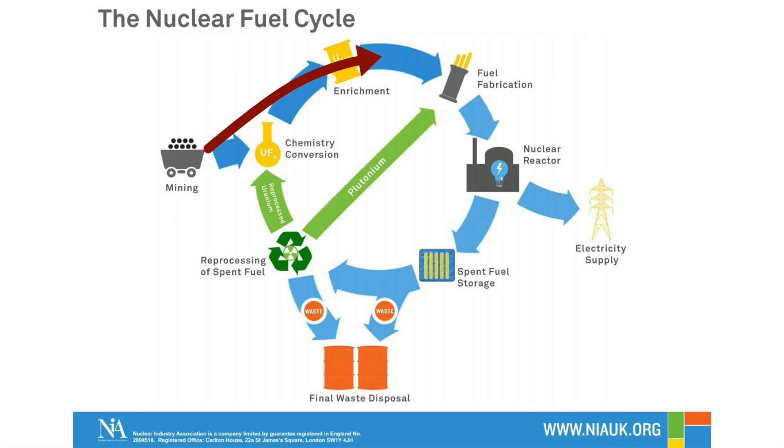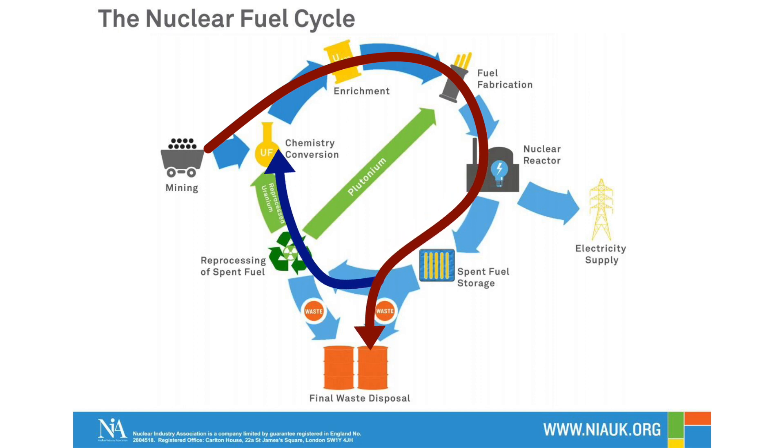Instead of throwing away used uranium, it is actually possible to reuse spent nuclear fuel, either in more advanced reactors or through a recycling method called reprocessing — separate out the bad stuff and reuse the good to make recycled fuel. Except that the good stuff in this case is mostly plutonium, so you can see how that might be a problem. This leads directly to the fourth big disadvantage of nuclear energy: proliferation of nuclear weapons.